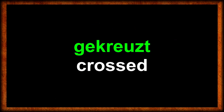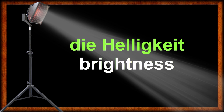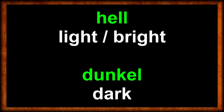Gekreuzt — crossed. Gerundet or rund — rounded or round. You could also distinguish between different colors by referring to their brightness, the Helligkeit. It's common to directly add those adjectives right in front of the respective color to create a compound word. For instance, one type of blue might be called light or bright blue — hellblau — whereas another type of blue is considered rather dark blue — dunkelblau. So it's hell — light or bright — versus dunkel — dark.